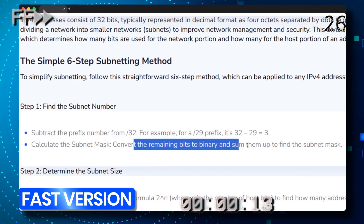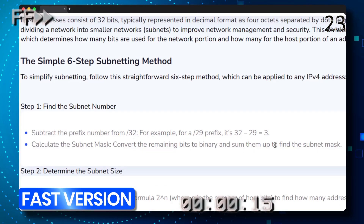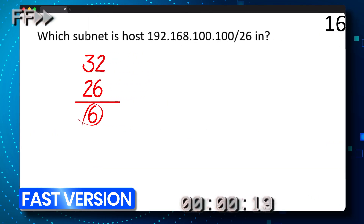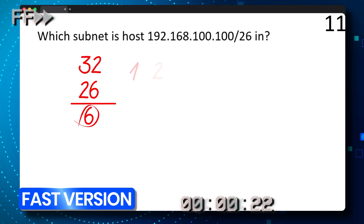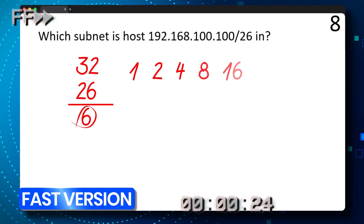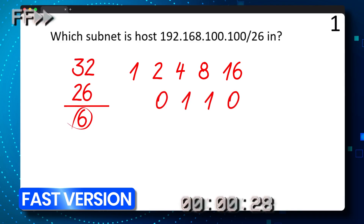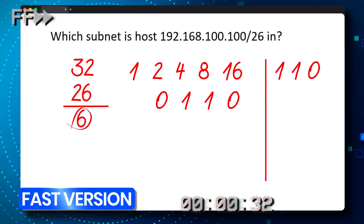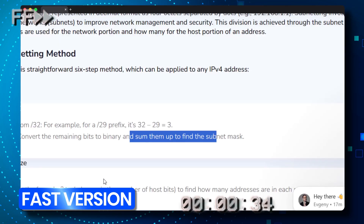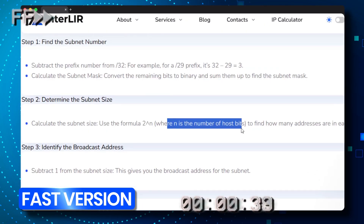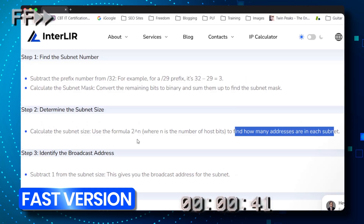Step two: calculate the subnet mask — convert the remaining bits to binary and sum them up. We're already running out of time. We need to convert 6 to binary: 1, 2, 4, 8, 16 — we use a 2 and a 1, so 110 is our binary version. Step three: calculate the subnet size using the formula 2 to the power of n, where n is the number of host bits. We're out of time — we've failed the exam.